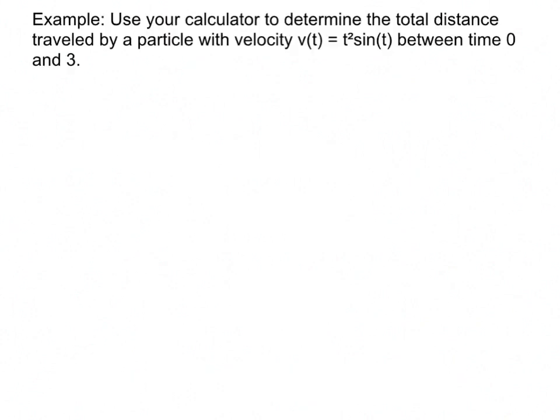In this example, we'll use our calculator to determine the total distance traveled by a particle with velocity v(t) = t²sin(t) between times 0 and 3. Total distance traveled means you do the integral of the absolute value of the velocity function. One option would be to graph this on your calculator.